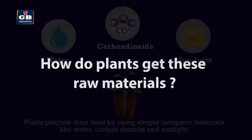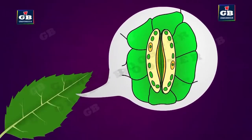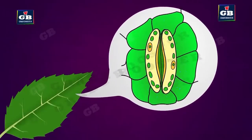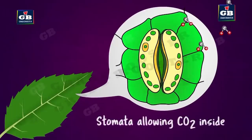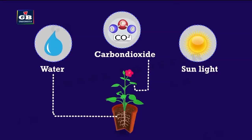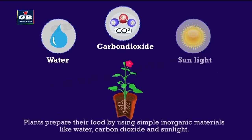Let us see how plants get their raw materials for photosynthesis. Plants get carbon dioxide through stomata. Stomata are the tiny pores present on the underside of the leaf. Plants get water from the soil through roots. Sunlight enters the chloroplasts through the upper surface of the leaf.